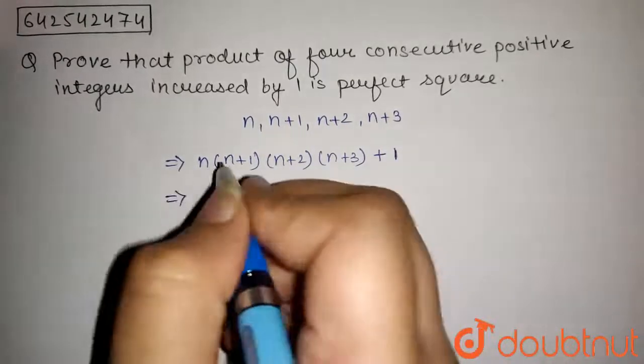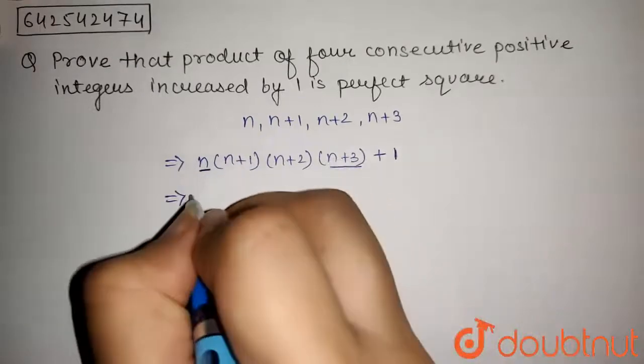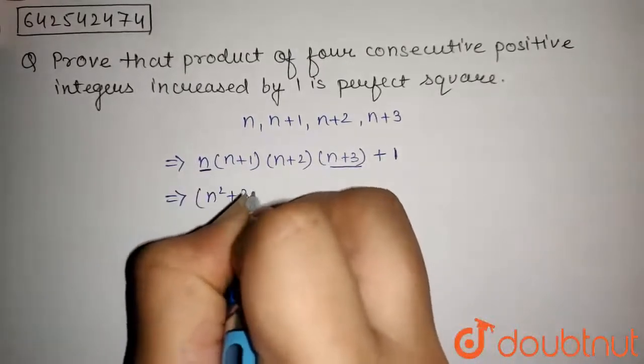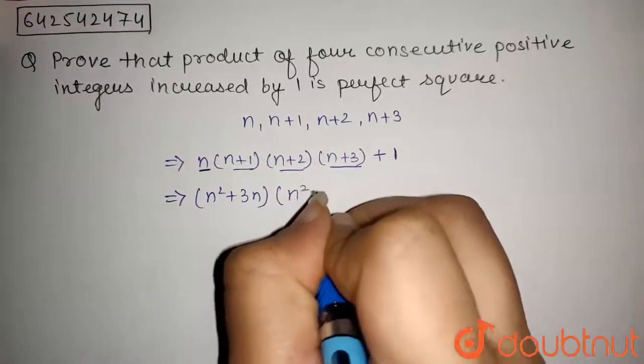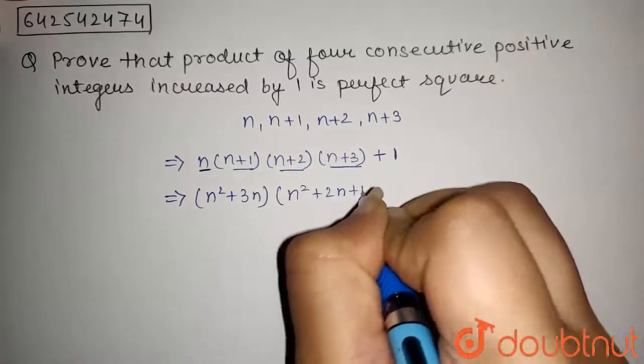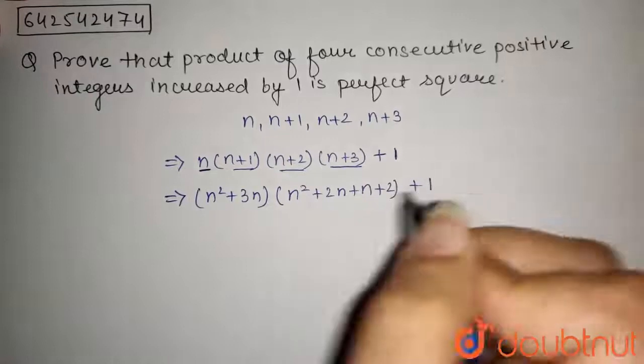Now, multiplying n and n plus 3, we get n square plus 3n. Now, multiplying this two, we get n square plus 2n, plus n plus 2, plus 1.